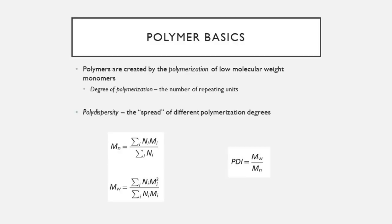We can never just create one molecule per reaction — we're always making millions and trillions of different molecules at a given time. Because we can't precisely control the degree of polymerization for each molecule, we always end up with a heterogeneous mix of polymers with different molecular weights. So we need to characterize the molecular weight not of a single molecule, but of the entire heterogeneous mixture.